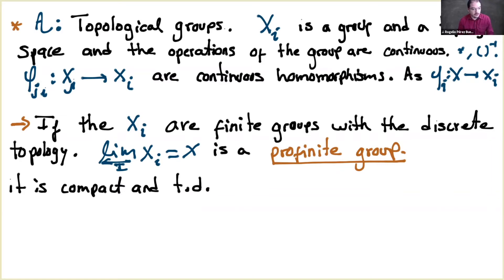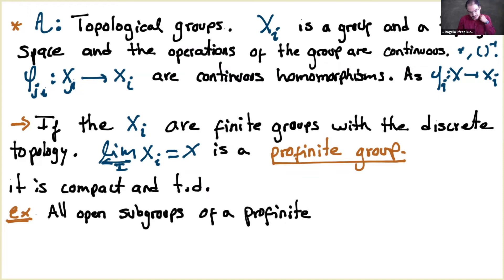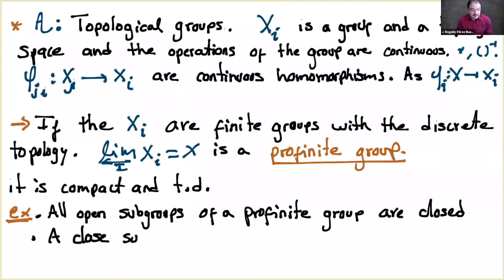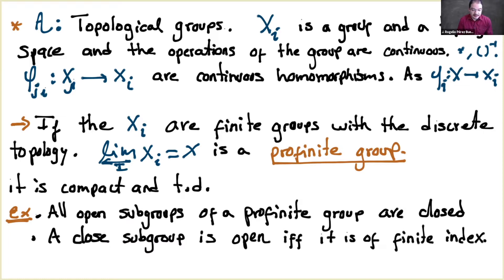We have a very nice exercise with the theory of profinite groups: for example, all open subgroups of a profinite group are closed; a closed subgroup is open if and only if it has finite index. These exercises are not very difficult and we can discuss your solutions in the exercise session.